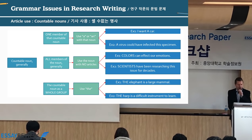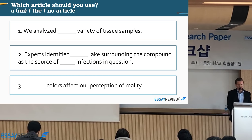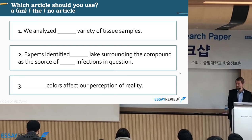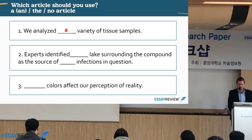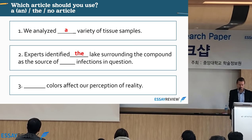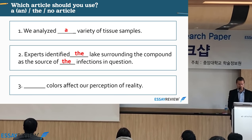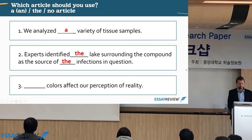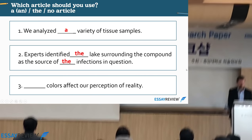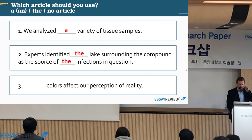Article quiz — which article should you use? Number one: 'We analyze a variety of tissue samples' — no article needed before 'variety.' Number two: 'Experts identified [the] lake surrounding the compound as the source of the infection.' Why 'the lake'? Because it's a specific lake. Number three: 'Colors affect our perception of reality' — no article, because it refers to all colors in general.